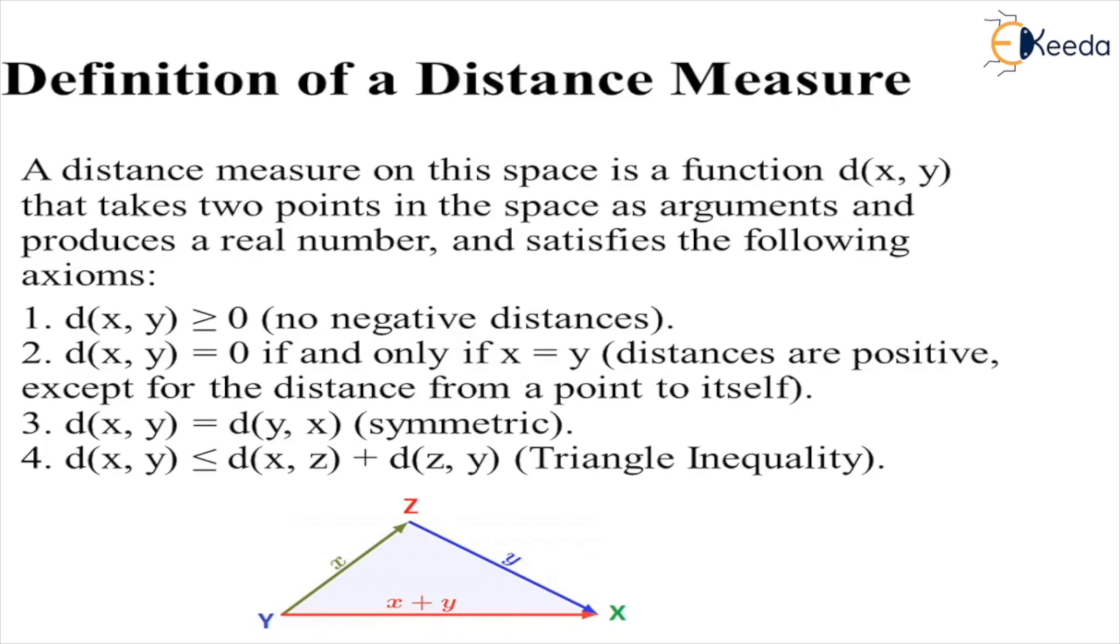...says if distance equals zero, it means we are calculating the distance between two points which are at the same location, or we are calculating distance of a point to itself. Third axiom says distance d(x,y) = d(y,x) is symmetric. Fourth axiom...